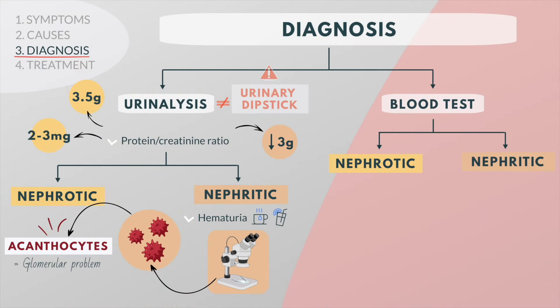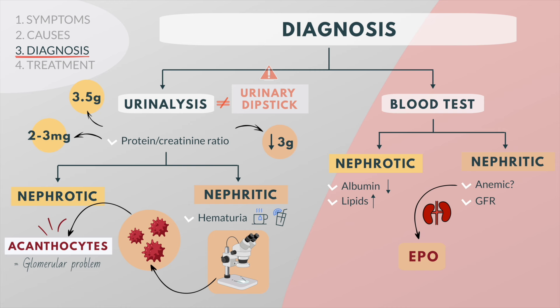Typical laboratory findings of nephrotic syndrome include low levels of albumin and a high concentration of lipids, sometimes exceeding 10 times that of normal concentration. In glomerulonephritis, a complete blood cell count is used to determine if the patient is anemic, which may suggest impaired erythropoietin production by the kidneys, and it is also used to estimate the GFR in order to document the degree of renal dysfunction.